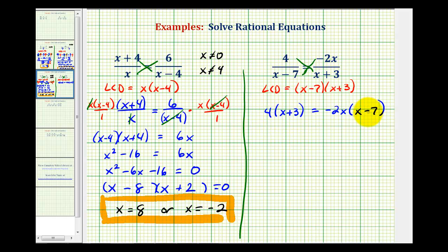Now we'll clear the parentheses and solve for x. So we'll have 4x plus 12 equals, and on the right side we'd have negative 2x squared plus 14x.